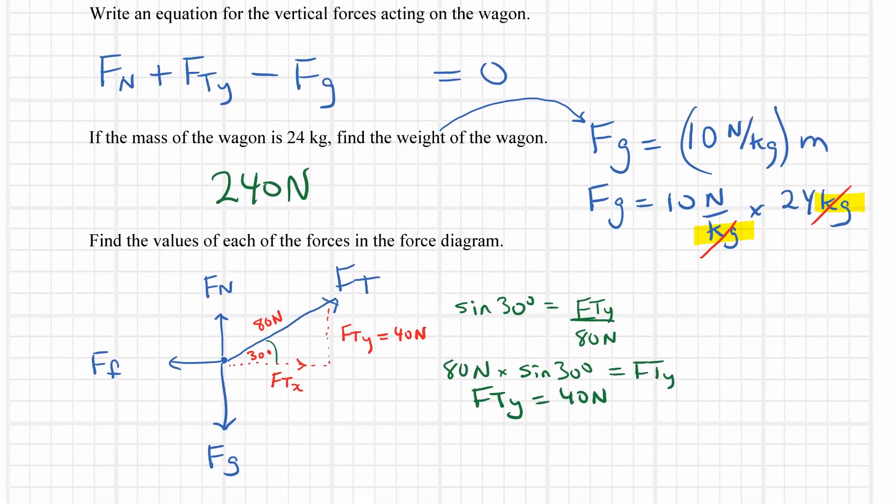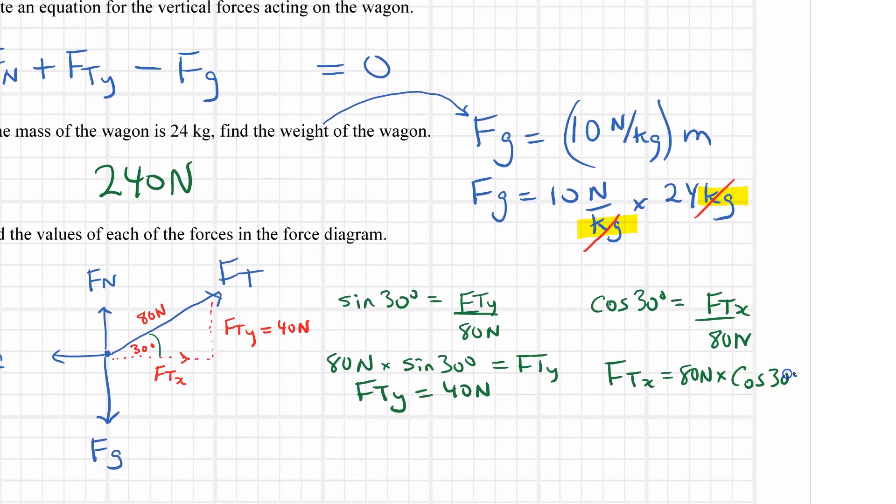Similarly I can use the cosine of 30 degrees. Cos of 30 degrees is equal to the adjacent over the hypotenuse. So looking at my 30 degrees the adjacent side is FTX, the x component of the tension force, and the hypotenuse is still 80 newtons. So FTX is going to be equal to 80 newtons times the cos of 30 degrees which I'm going to put down as 69.3 newtons. So I'll label this over here. This one is equal to 69.3 newtons. Okay so I've got the tension force figured out and I have the components figured out.